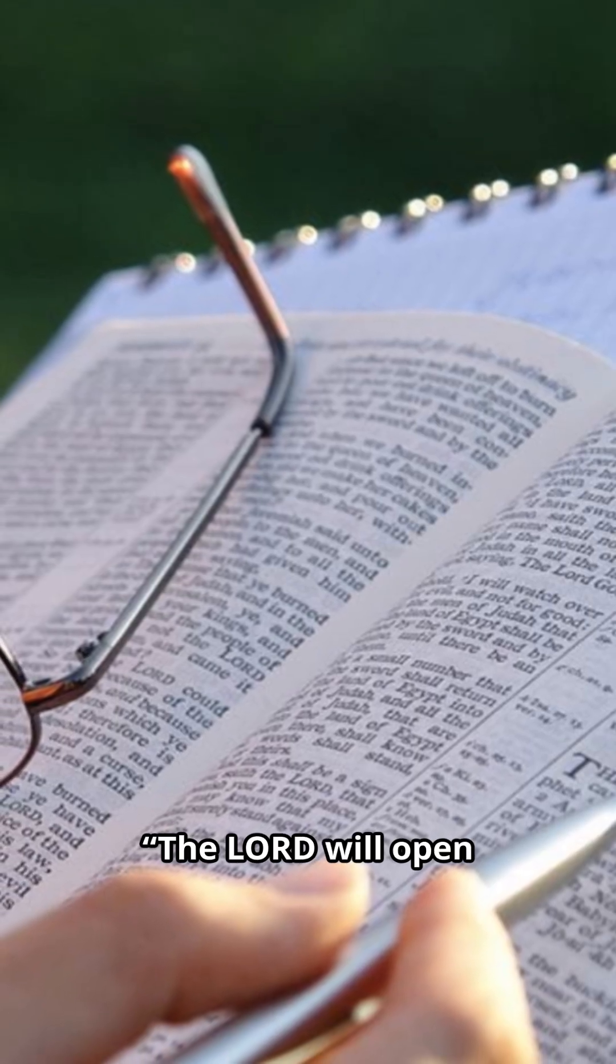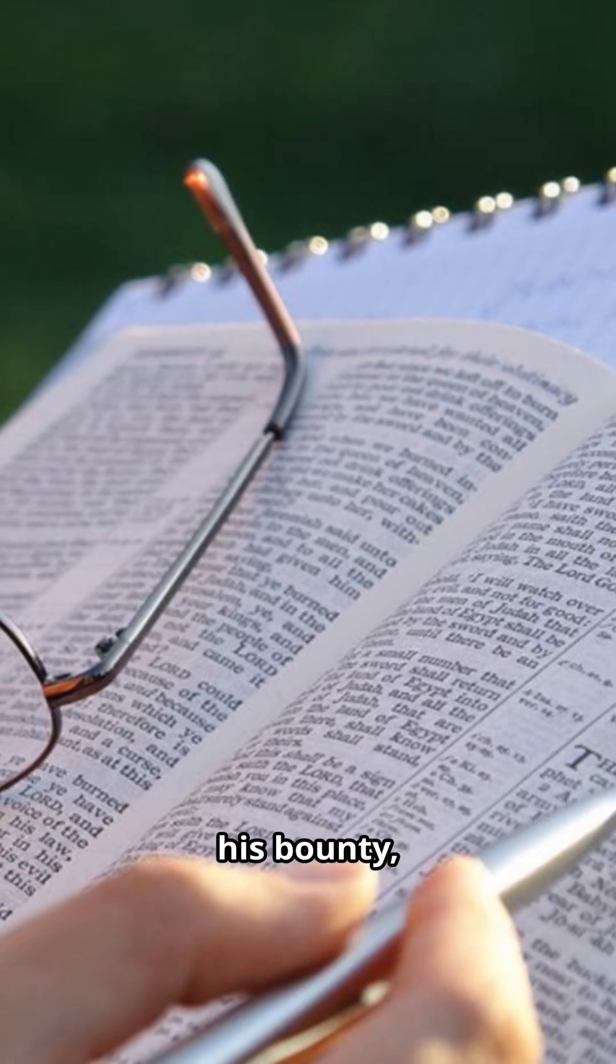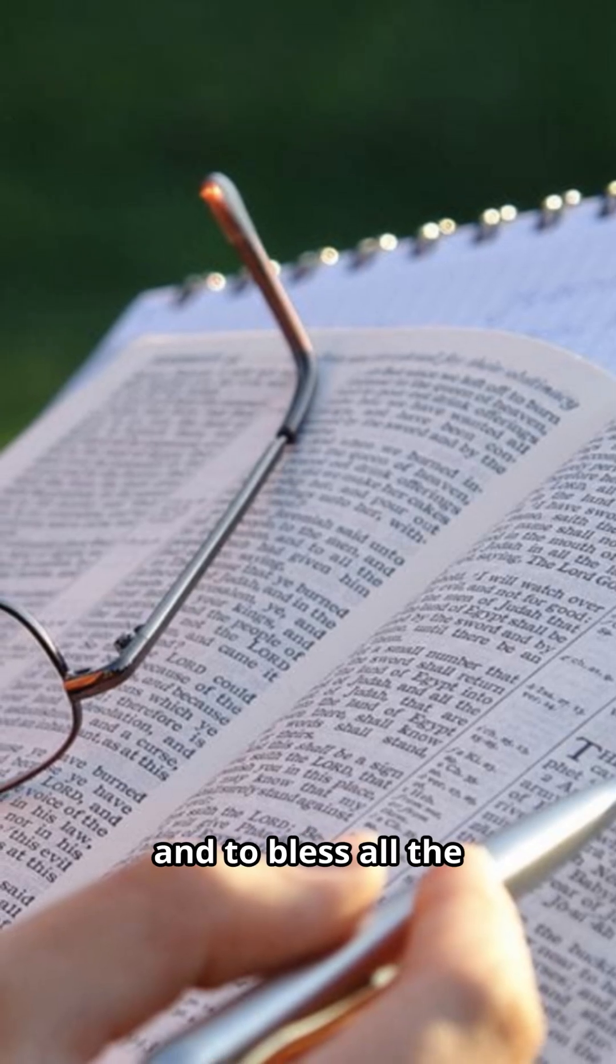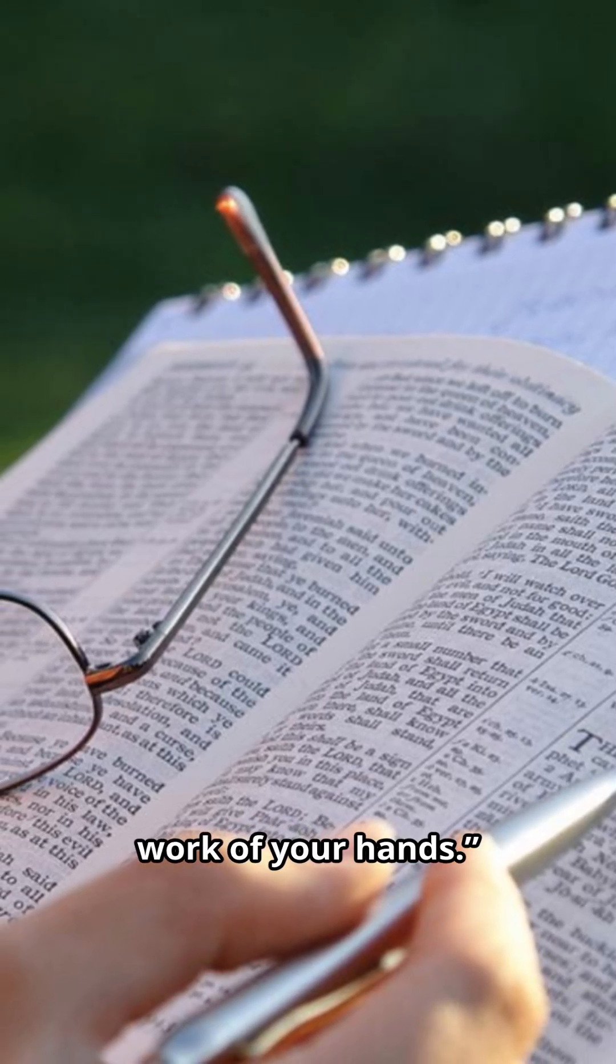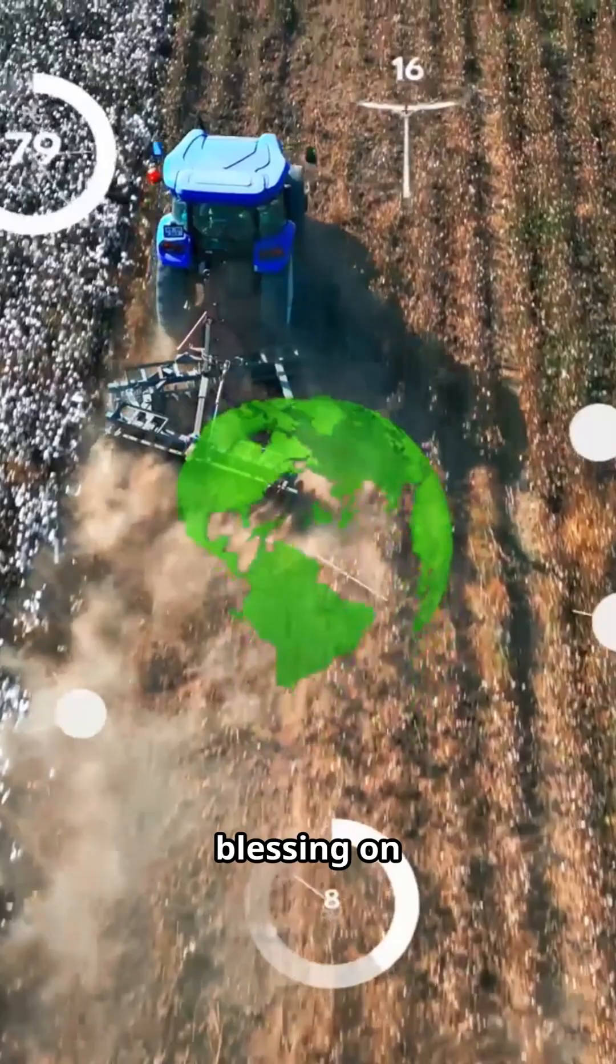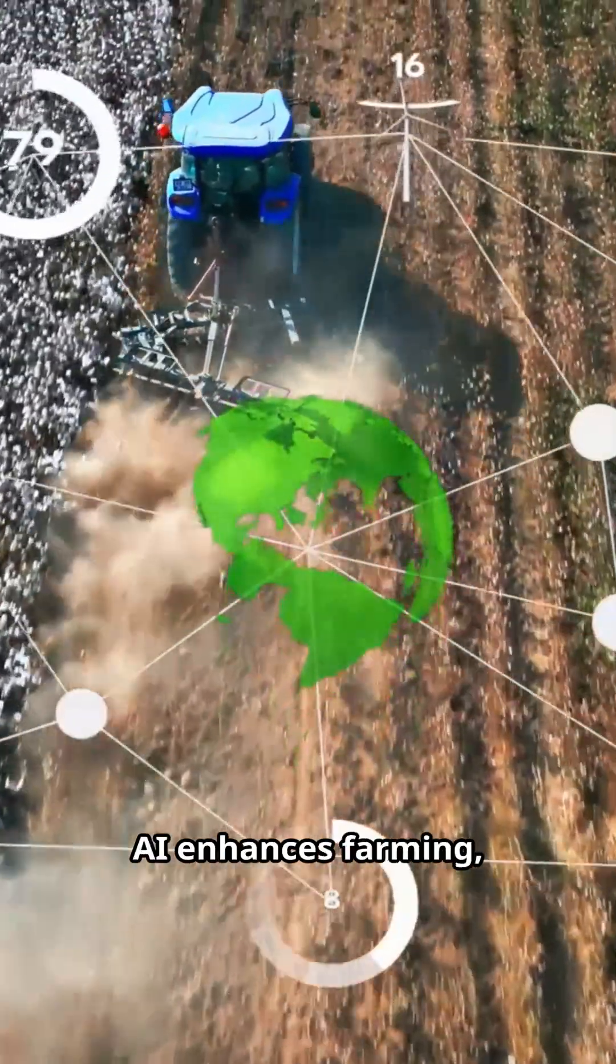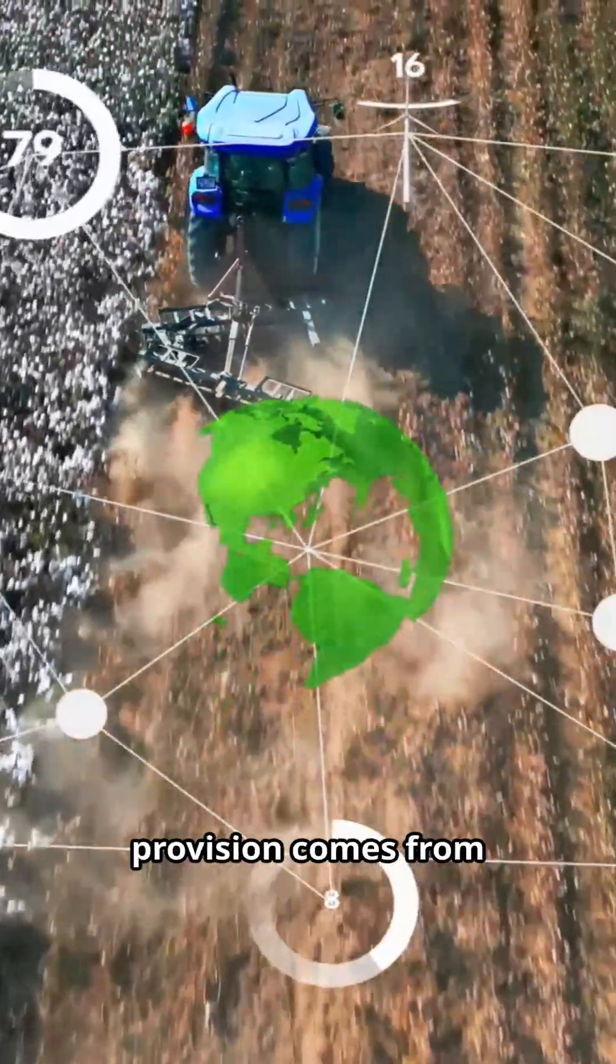Deuteronomy 28:12 - The Lord will open the heavens, the storehouse of His bounty to send rain on your land in season, and to bless all the work of your hands. This verse highlights God's blessing on productive work. AI enhances farming, but the ultimate provision comes from the Lord.